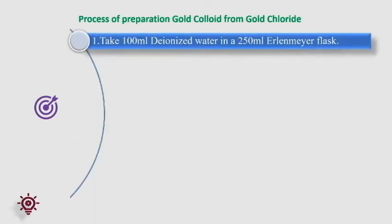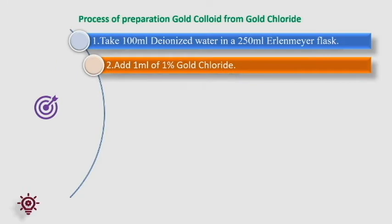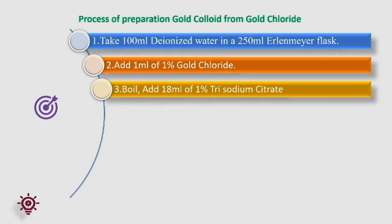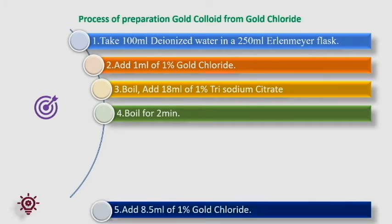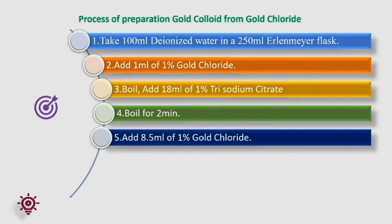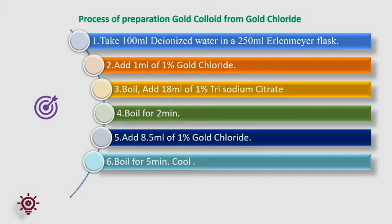Steps involved in gold colloid preparation. In a clean Erlenmeyer flask (250 mL), take 100 mL of deionized water. Add 1 mL of 1% gold chloride solution. Place a clean stirrer bar in the solution. Invert a clean 100 mL Erlenmeyer flask in the mouth of the 250 mL flask. Switch on the hot plate, stir, and bring contents to boil. Add 18 mL of 1% trisodium citrate all at once. Start the timer and continue to boil for 2 minutes. At 2 minutes, add 88.5 mL of 1% gold chloride solution and continue to boil for 5 more minutes. Remove the flask and place in a tub containing cold water and allow to cool at room temperature.